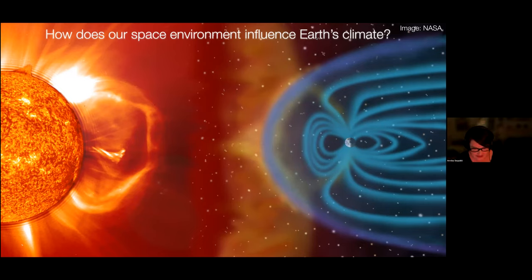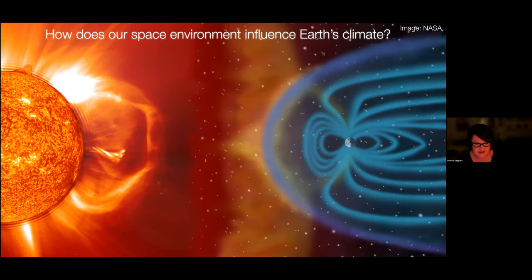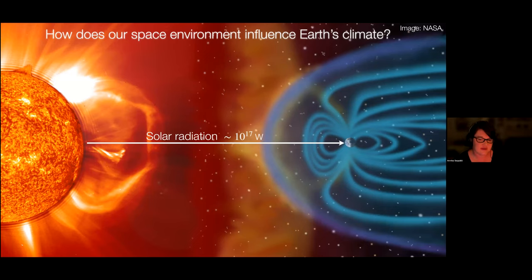Let's have an overview look at the system we're going to be addressing today. This is really the big picture. We have the sun on the left and earth on the right, with our magnetosphere — our protective bubble — shown with blue lines, and a big eruption coming from the sun. Solar radiation is the first important thing. That's the main thing that gives us a nice warm habitable planet and provides about 10^17 watts of energy — 10^17 joules per second — at Earth.